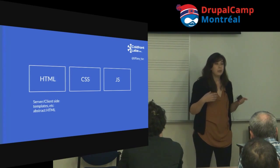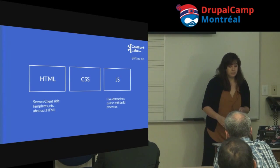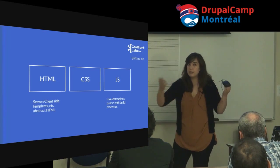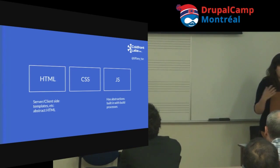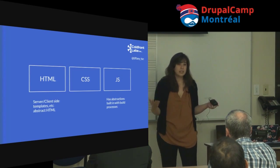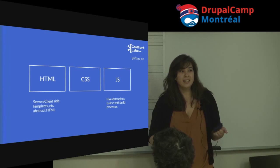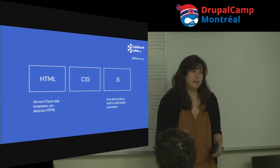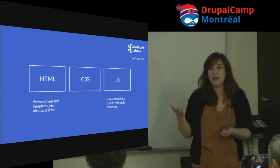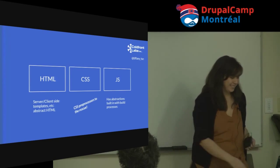If we look at the front end as a spectrum — HTML, CSS, and JavaScript — with HTML, server and client-side templates are that form of abstraction. We've created header and footer templates so we don't have to go into hundreds of HTML files to change a single word. JavaScript already has abstractions built in: variables, functions, methods. But with CSS, for the longest time we've been totally fine just going into a giant CSS file and editing it directly.